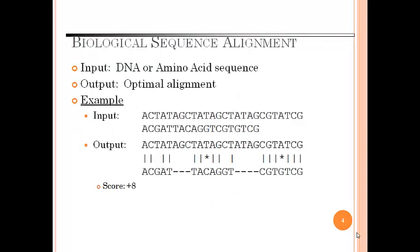For biological sequence alignment, the input is a DNA or amino acid sequence and the output is an optimal alignment. For example, here is one DNA or amino acid sequence for which this is the given output and here the score is plus 8.